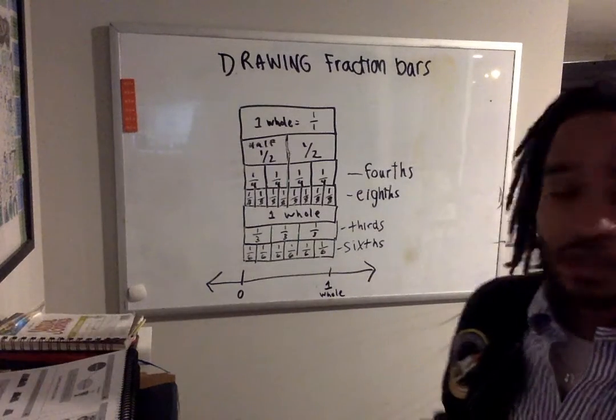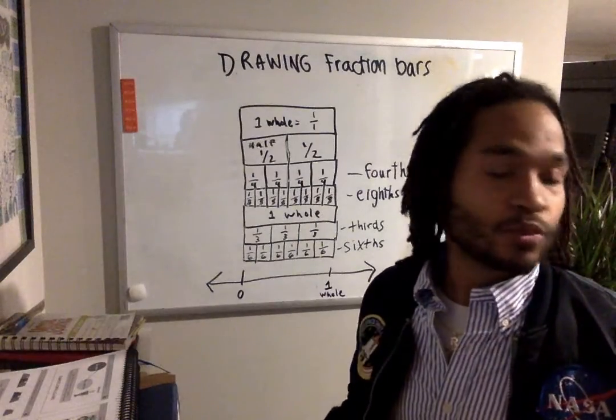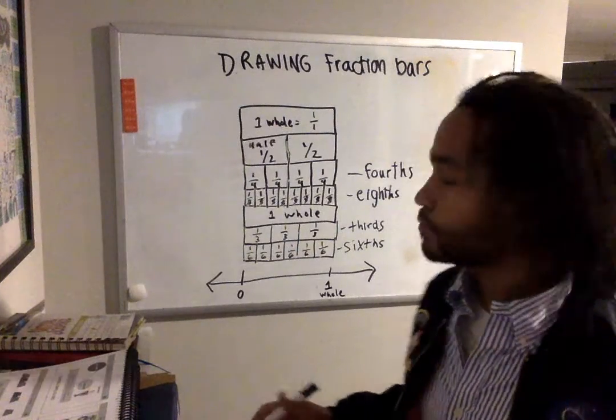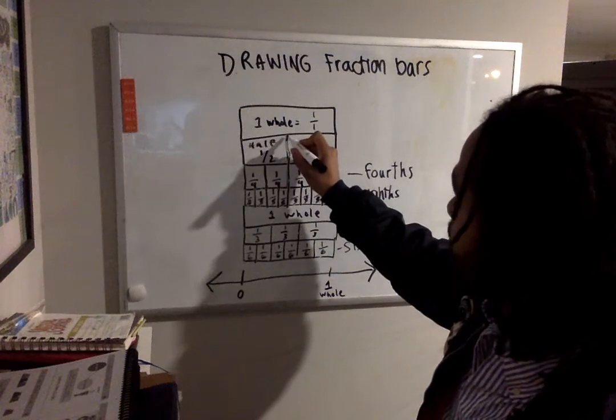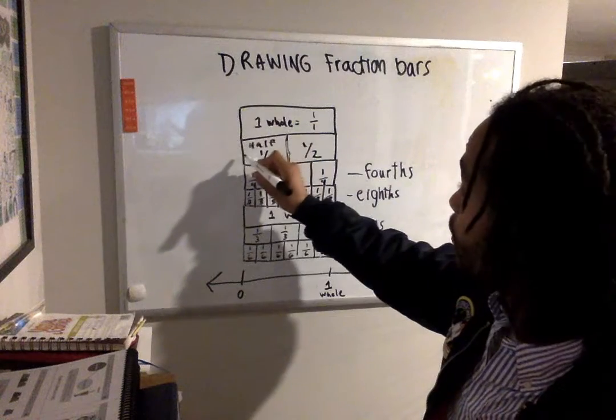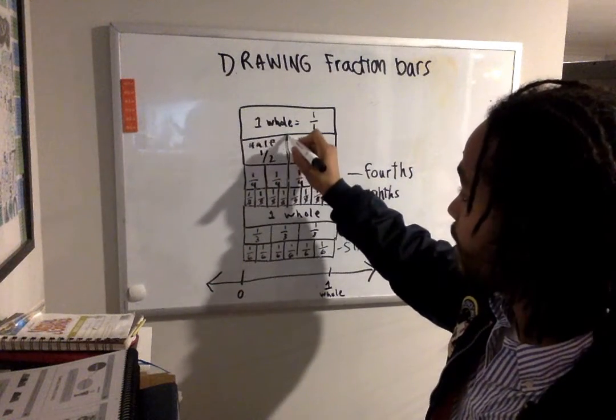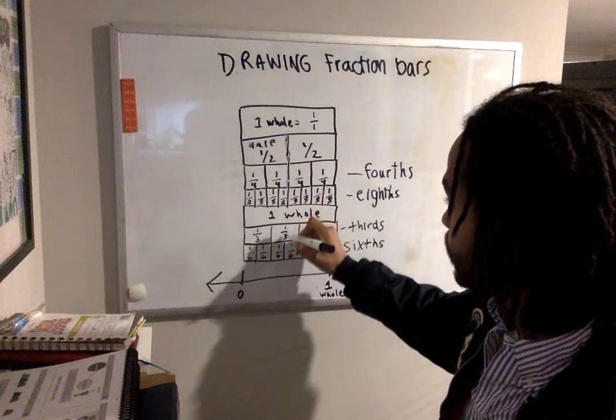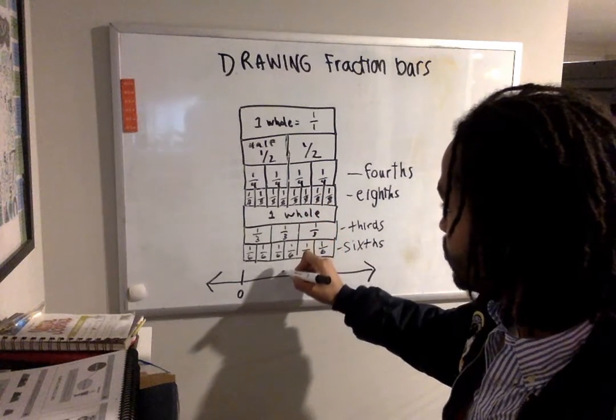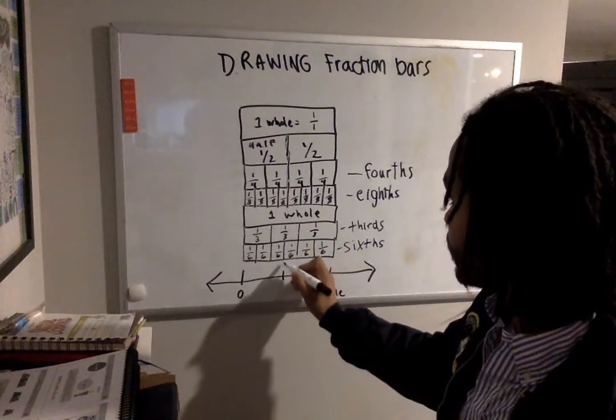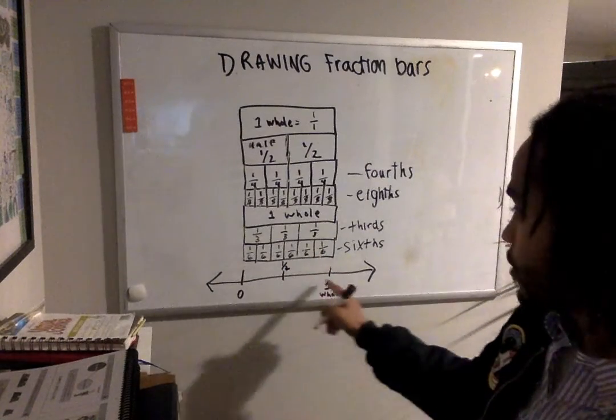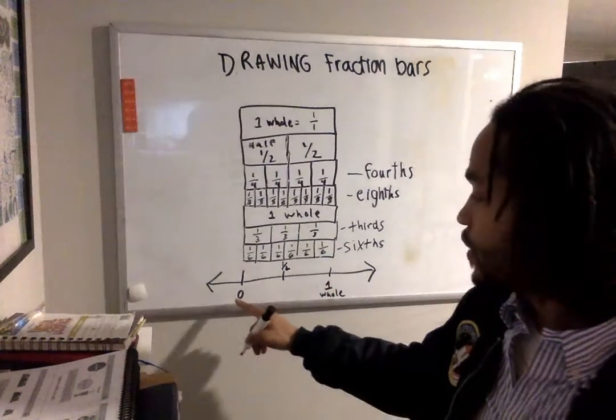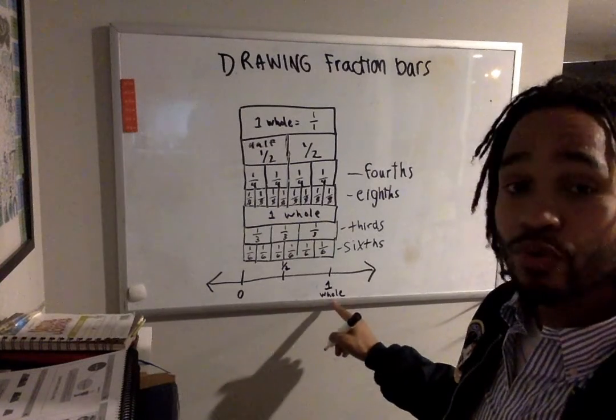Now, let's say I want to put one half on a number line. I'm gonna look at where this line is. One half. This is where the line would end. And I'm gonna go down, keeping my arm as straight as possible. You can use a ruler if you want. And I'm gonna write one half. That looks about right. Halfway between zero and one whole.